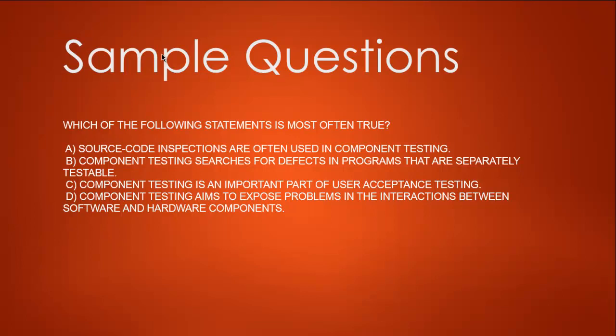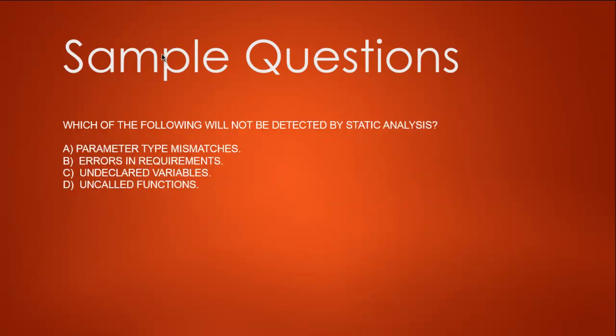Option D - component testing aims to expose problems in the interaction between software and hardware - though it is partially true, component testing doesn't directly address interaction between software and hardware. The configuration issues that happen between software and hardware are not part of component testing. So option B looks closer: component testing searches for defects in programs that are separately testable. The answer is B.